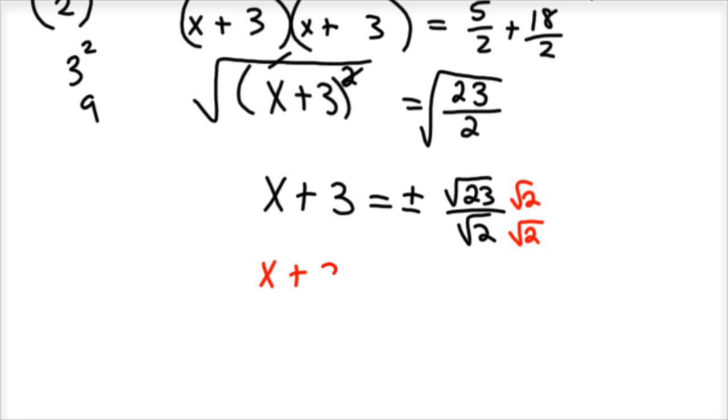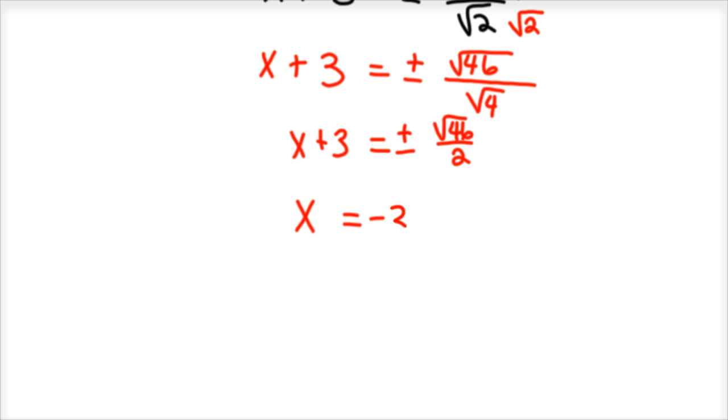And so I've got x plus 3 equals plus or minus the root of 46 over 4. Well, that's kind of nice. 4 root of 4 is 2, so we've got rid of our radical. So x plus 3 equals plus or minus radical 46 over 2. Then you can move your 3 over, and x equals negative 3 plus or minus root 46 over 2. And again, that's, for the most part, the answer you're looking for.